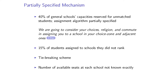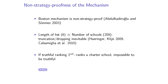Another underspecified aspect is the tie-breaking scheme — we don't know if it's multiple tie-breaking, single tie-breaking, or something else. The number of available seats at each school is also not known exactly. This mechanism is clearly non-strategy proof. The rank order list is much shorter than the number of schools, so truncation and dropping strategies are inevitable. And due to constraints on which school types can be ranked at specific positions, students sometimes cannot truthfully express their preferences.